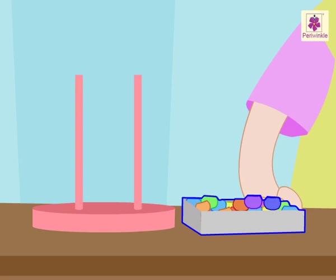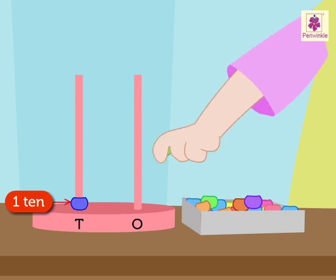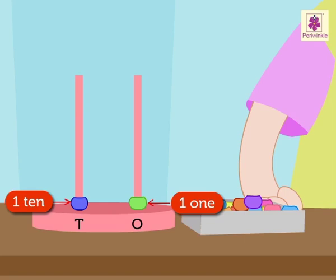The abacus has two rods and many beads. One rod is for tens and the other is for ones. Each bead in the tens rod represents one ten and each bead in the ones rod represents one one.